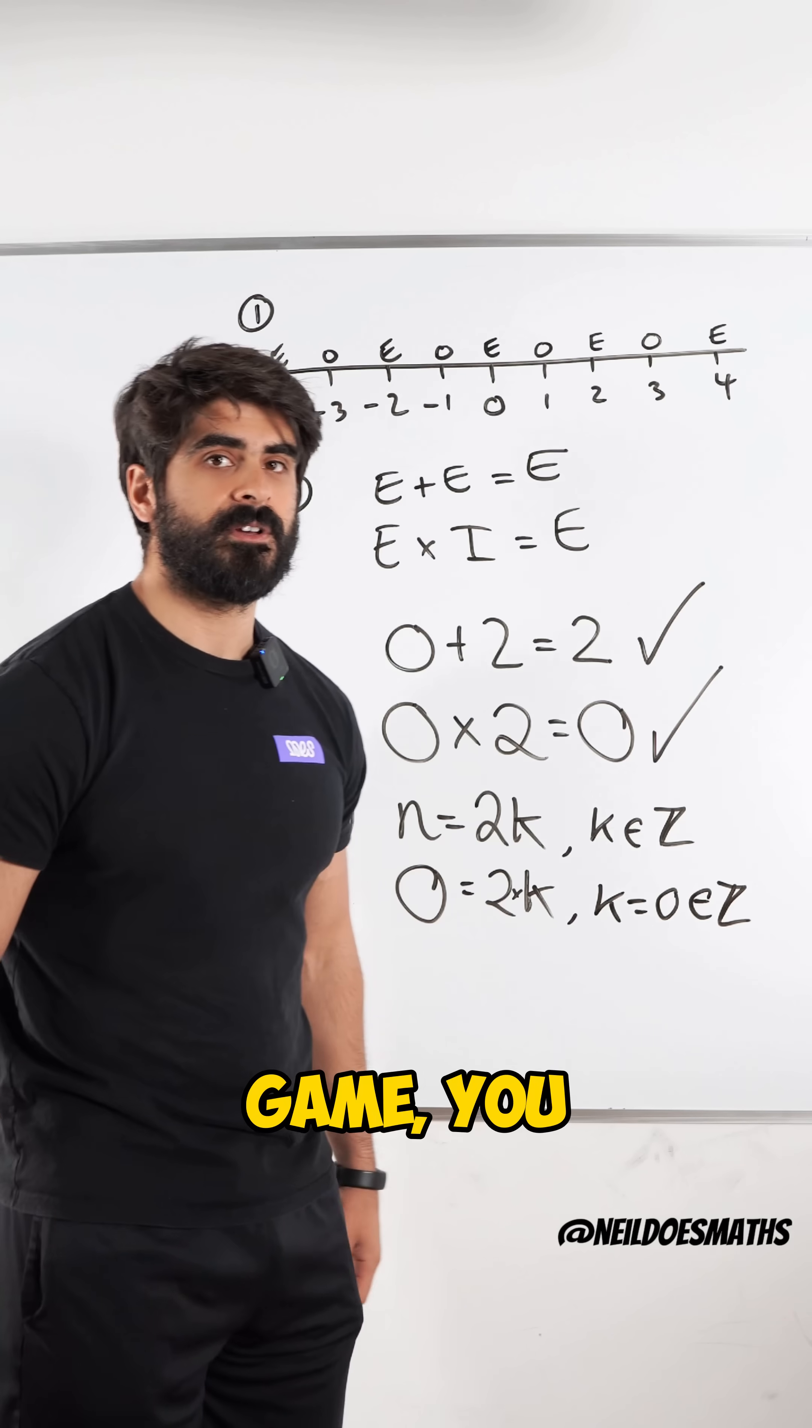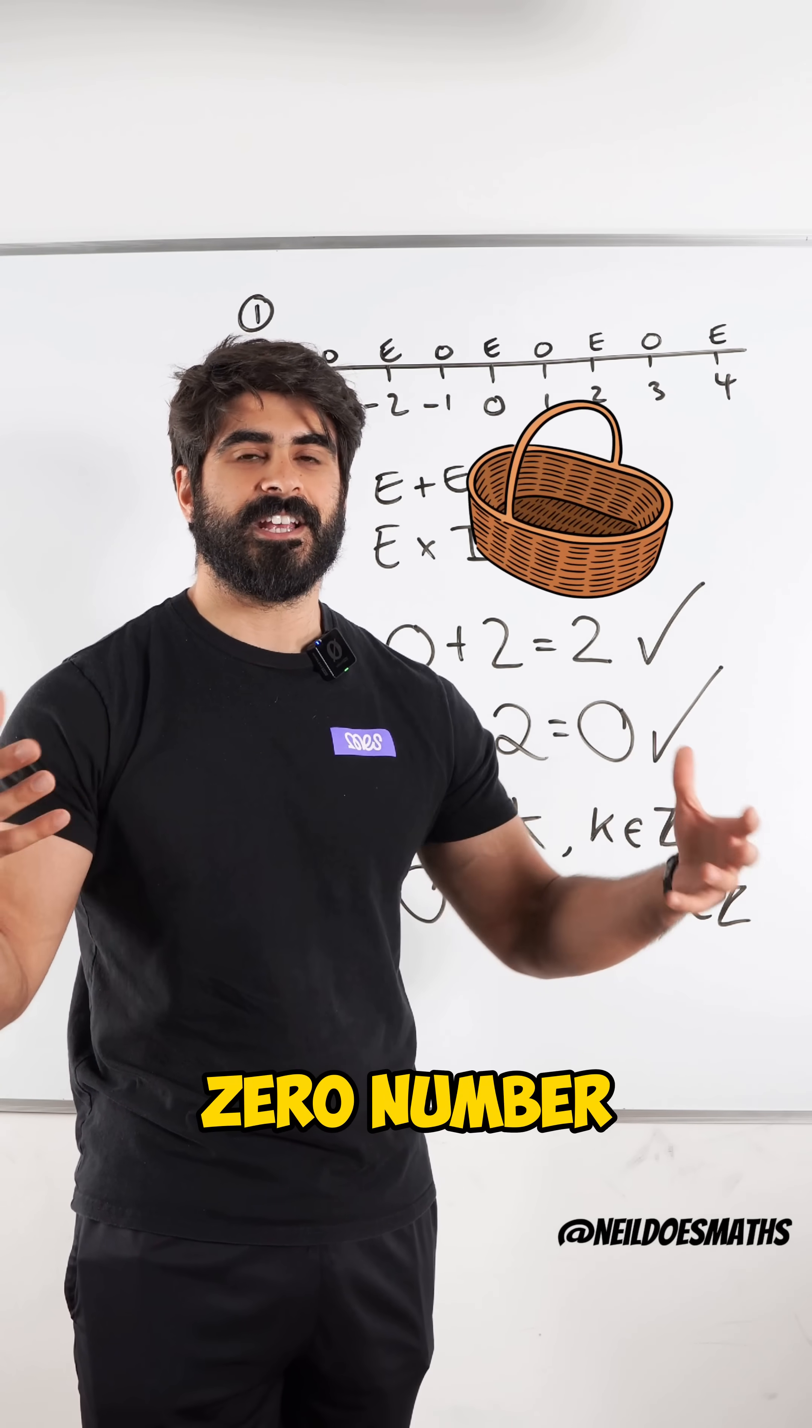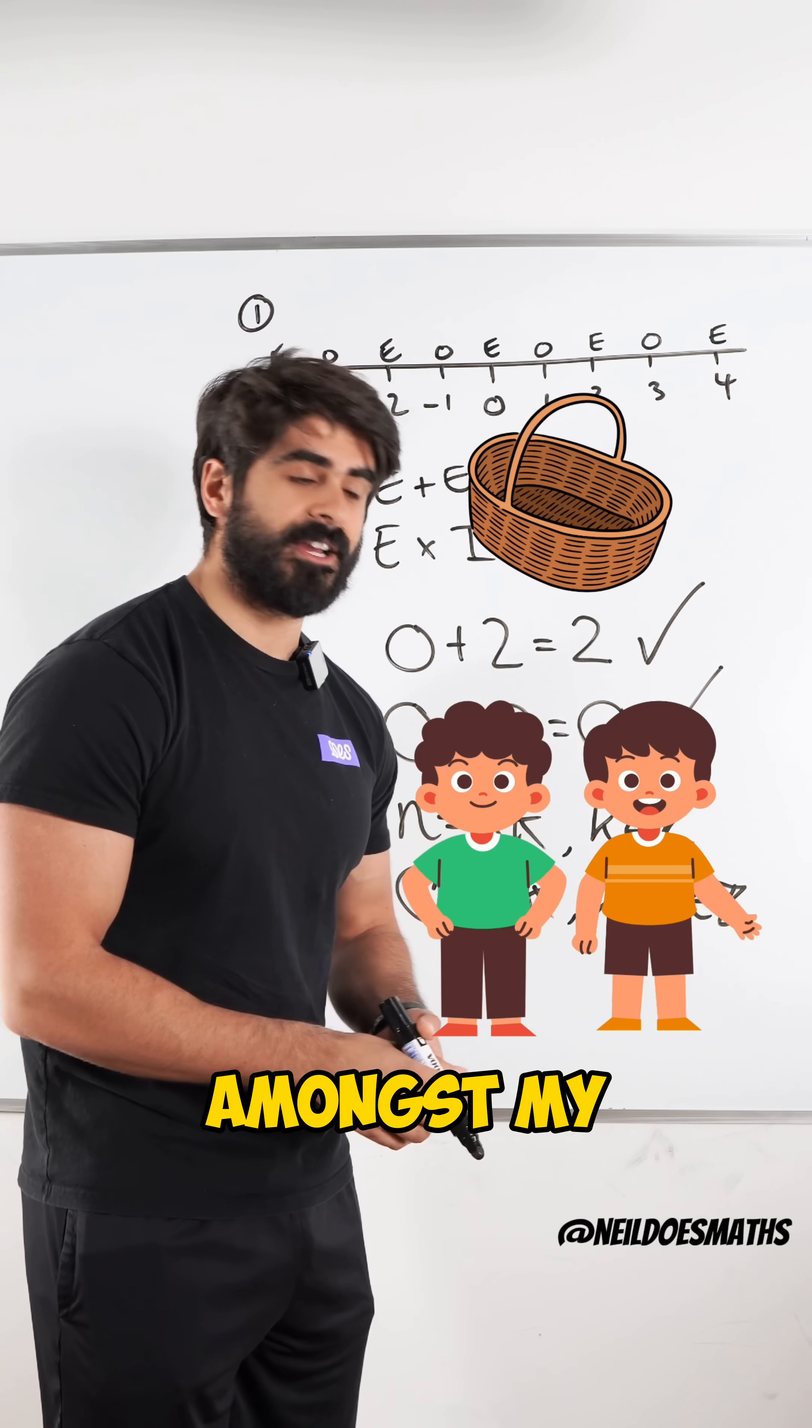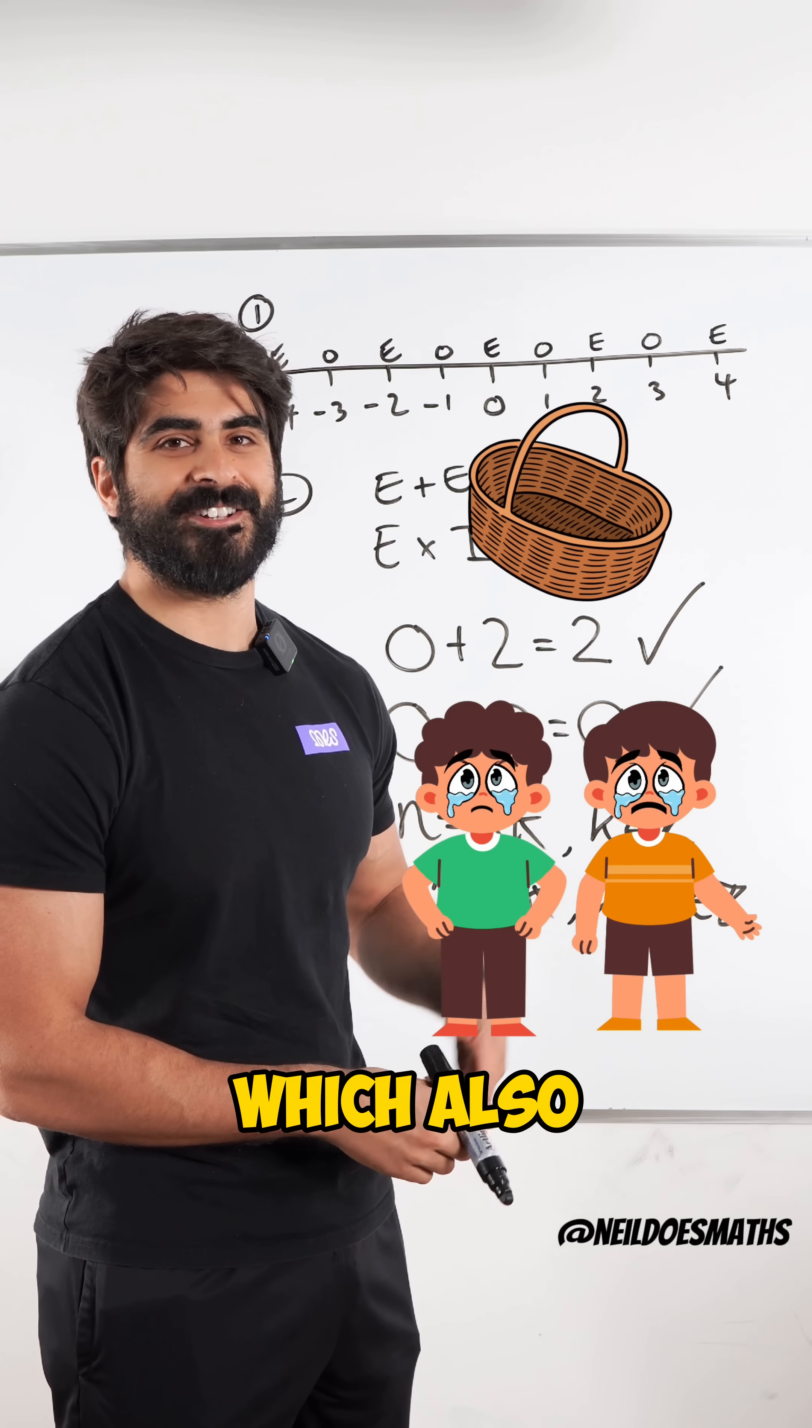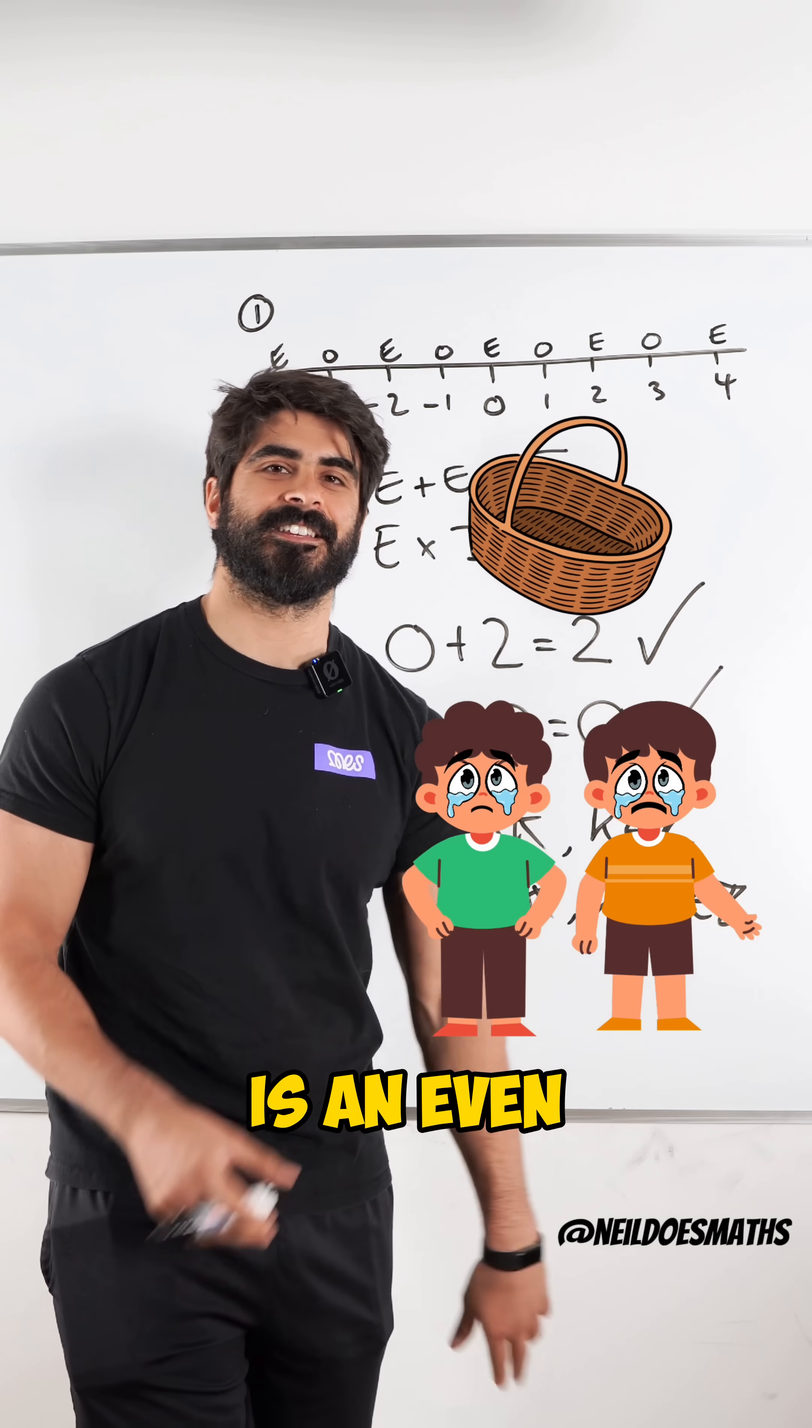And if you want to play a game, you can go with your kids and you can say, I have zero number of sweets and I want to divide it evenly amongst my two kids. Well, each of them would get zero, which also proves that zero is an even number.